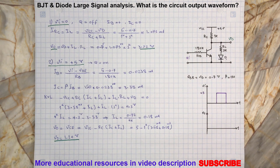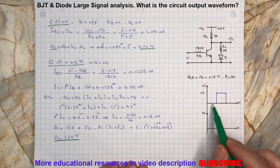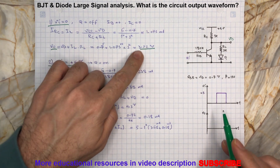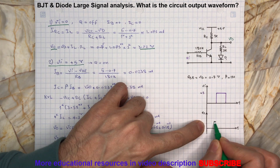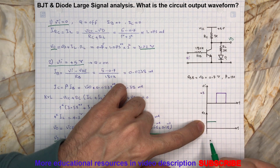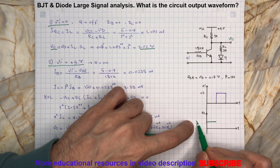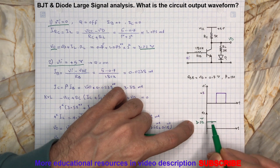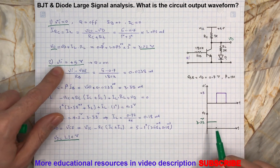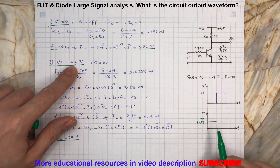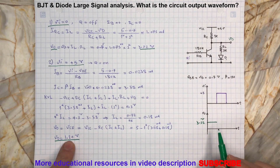Now we can draw the output voltage waveform in relation to the input voltage. For VI equal to zero, we will have a higher output voltage. For VI equal to 5V, we will have 1.24V.